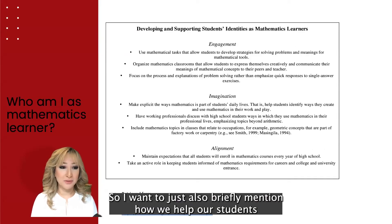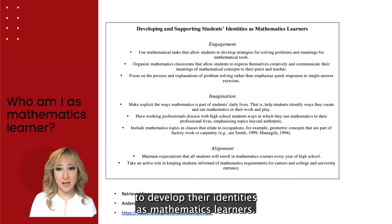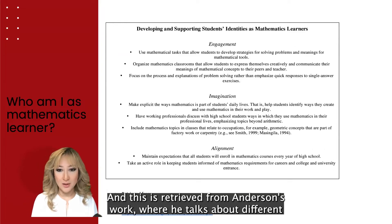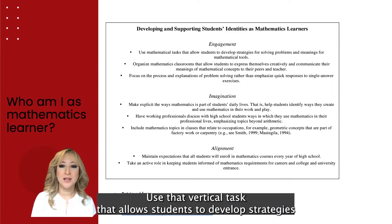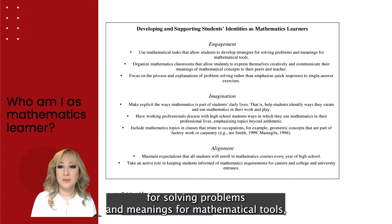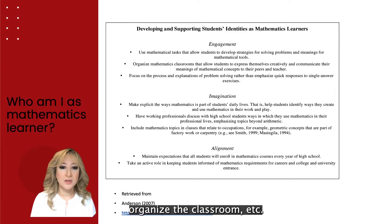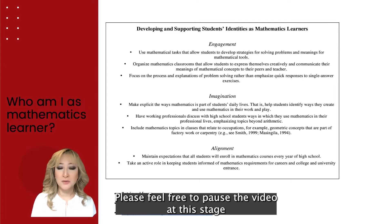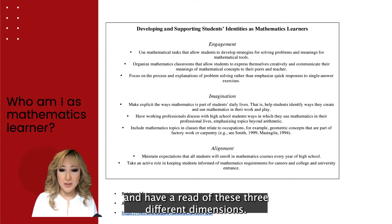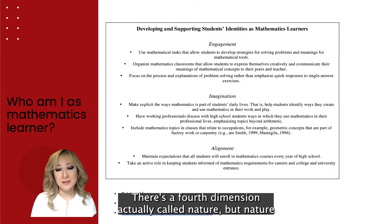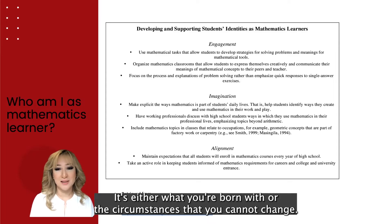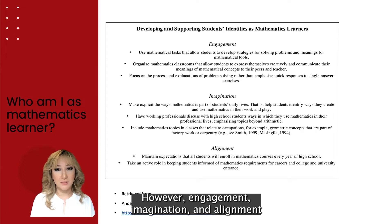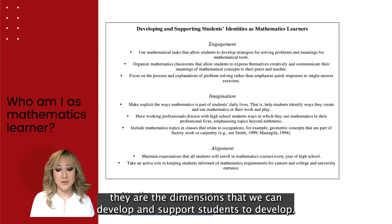I want to briefly mention how we help students develop their identities as mathematics learners. This is retrieved from Anderson's work, where he talks about different dimensions that contribute to the identity of a mathematics learner: engagement — using mathematical tasks that allow students to develop strategies for solving problems and meanings for mathematical tools — imagination, and alignment. Please feel free to pause the video and read these dimensions. There is a fourth dimension called nature, but that's what you're born with and cannot change. Engagement, imagination, and alignment are the dimensions we can develop and support students to develop.